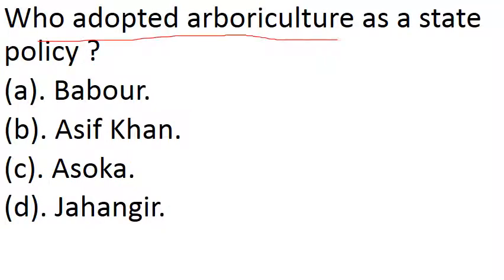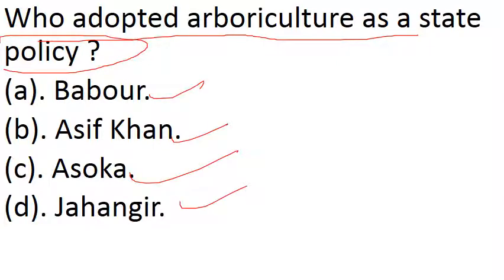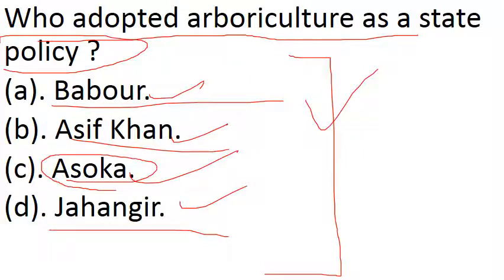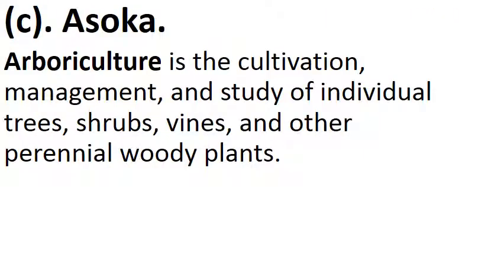Next question: Who adopted arboriculture as a state policy? Options are Babur, Ashiv Khan, Ashoka, Jahangir. Babur, Ashiv Khan, and Jahangir are Mughal Emperors, so the remaining answer is Ashoka. The answer is option C — Ashoka. But you should know what arboriculture is and why Ashoka made it a state policy. We will discuss it in the next slide.